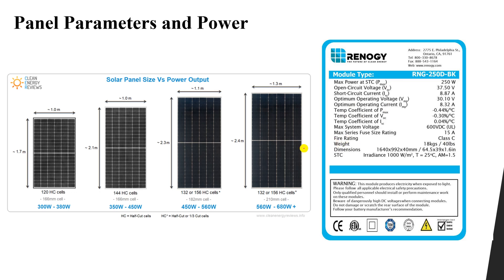Other datasheet parameters include the fire rating, the weight in kilograms and pounds, and the dimensions — length × width × depth in millimeters and inches. These are the STC conditions. This image is taken from Clean Energy Reviews and shows the top electrical panels in 2022.